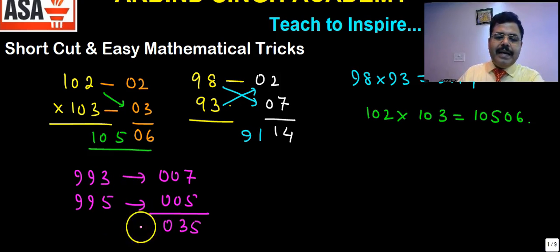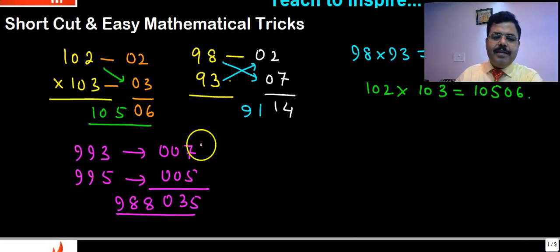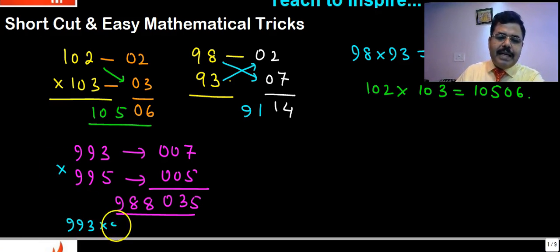988 will be left, so 988. So product of these two will be like this - that means product of 993 multiply by 995 will come nothing else but 988035. That will be the product and you can do it in seconds only.